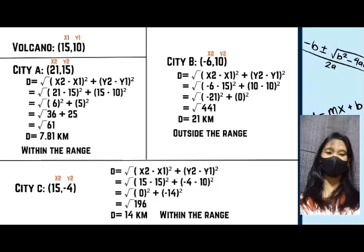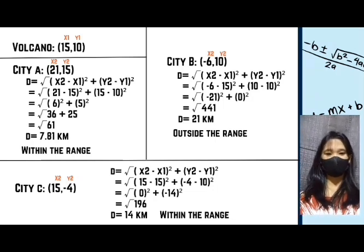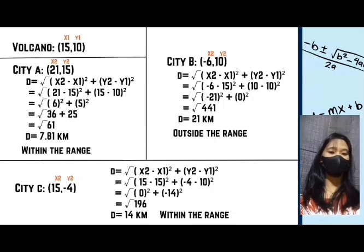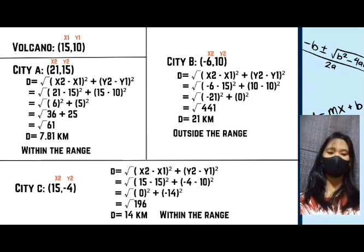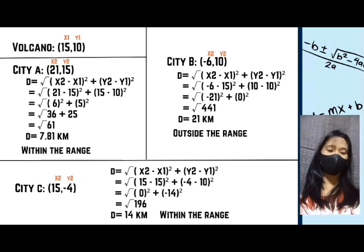The distance of City A from the volcano is 7.81 kilometers. Since 7.81 km is less than 14 km, City A is within the range of the volcano.